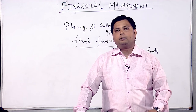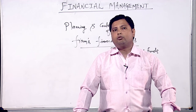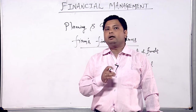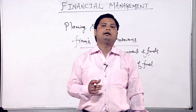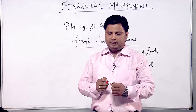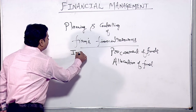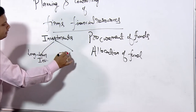Now we are going to discuss the major roles of a finance manager in an organization — what he or she is supposed to do. There are three main functions performed by a finance manager, which we can summarize into three single words: investment decisions, financing decisions, and dividend decisions. Investment decisions relate to the selection of assets in which funds will be invested by a firm. An organization makes two types of investments: long-term investments and short-term investments.